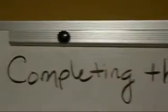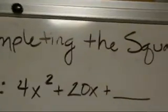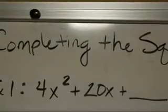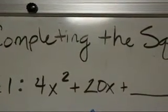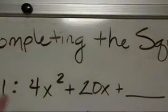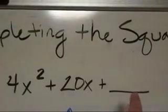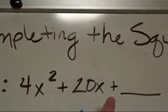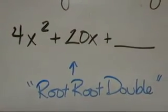We need to learn the skill for completing the square. Essentially, we give you an unfinished trinomial, and you want to turn the trinomial into a perfect square trinomial, which means we need the first term to be a perfect square, we need the last term to be a perfect square, and that middle term is the product of the two square roots doubled, which we shortened up into root, root, double.